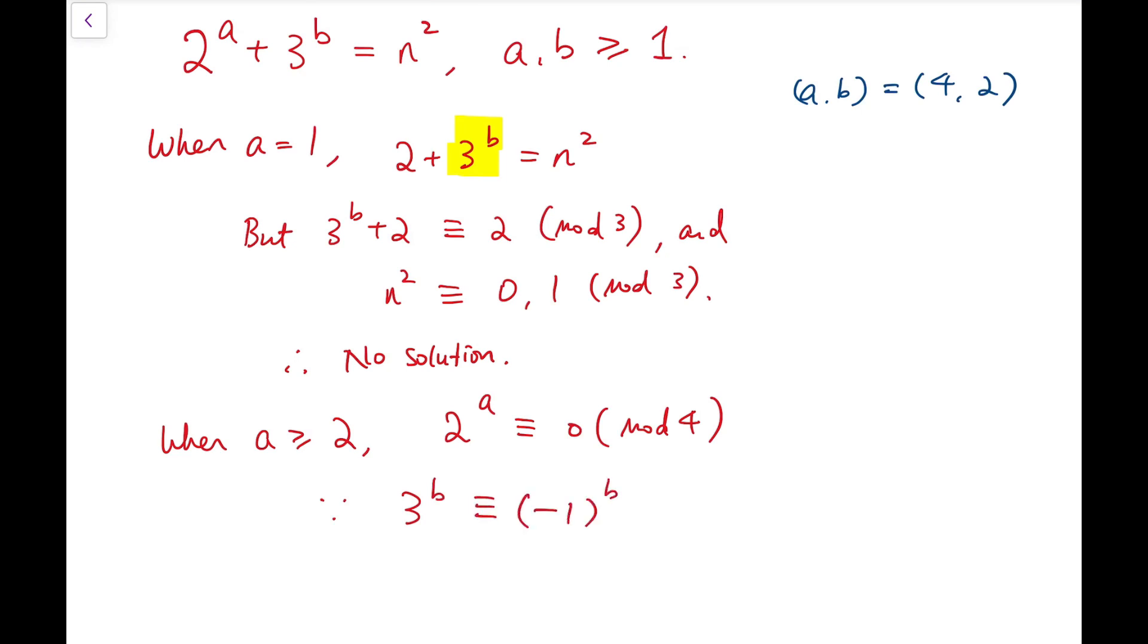So because I can rewrite 3 to the power of b to be minus 1 to the power of b mod 4, and that gives us minus 1 or 1 mod 4, depending on the parity of b.